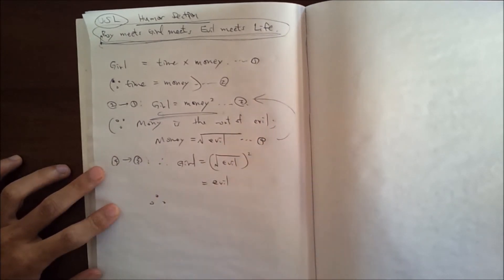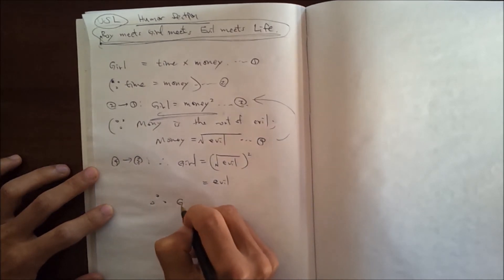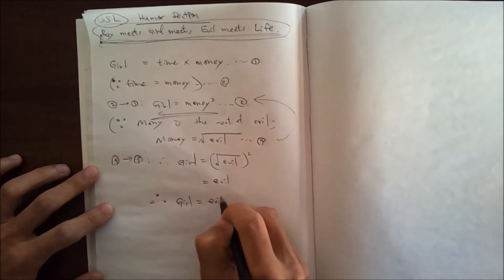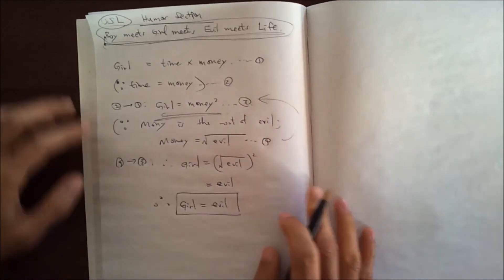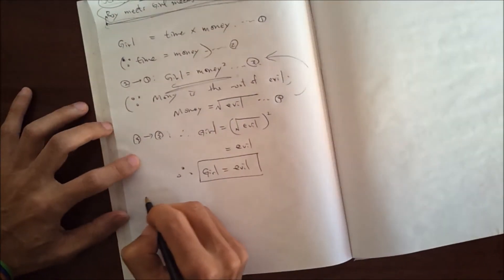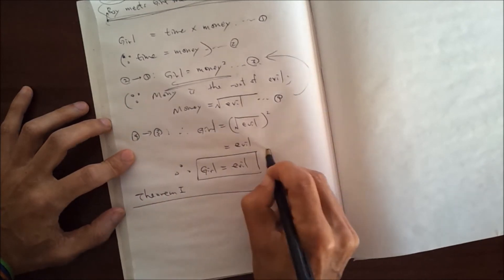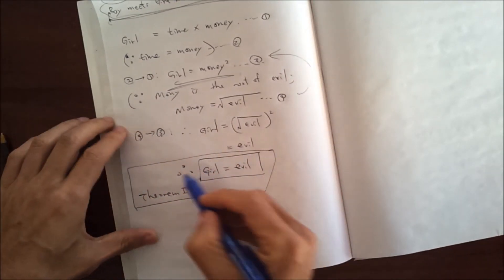Therefore, the original creator concluded girl equals evil. So I call this one theorem number one, which is girl is evil.